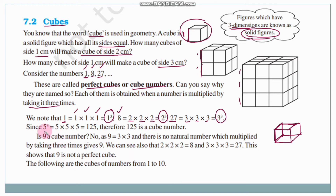Similarly, 5 cube is 5 into 5 into 5. Five times five is 25, and 25 into 5 is 125. So 125 is also a cube number. But is 9 a cube number? No — 9 is just 3 into 3, multiplied only two times. So nine is not a cube number; it is a square number.